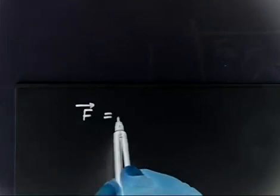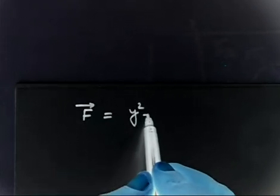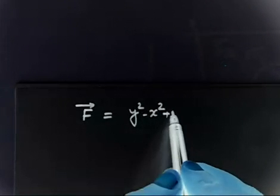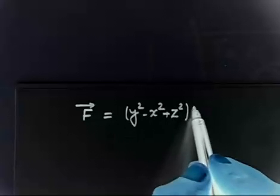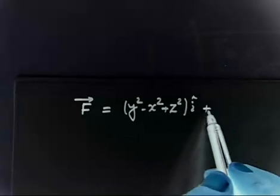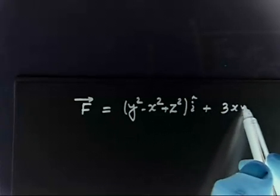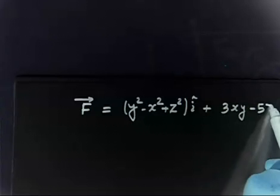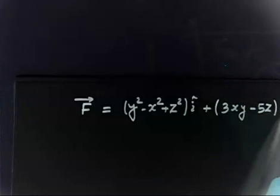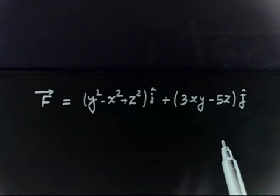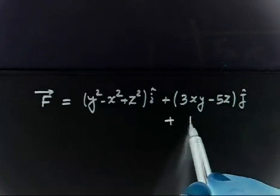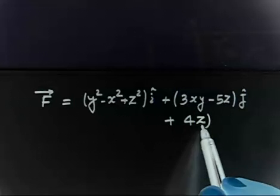This is an easy problem related to calculation of work done. We have to calculate the work. There is a force acting on a particle given by (y² - x² + z²) î + (3xy - 5z) ĵ, and it also has a z-component that is 4z k̂.